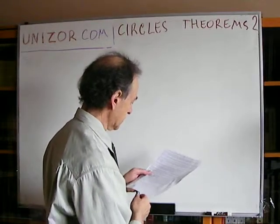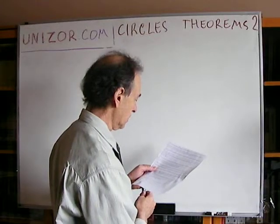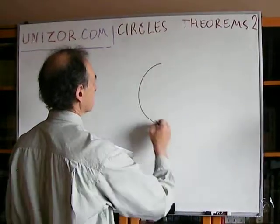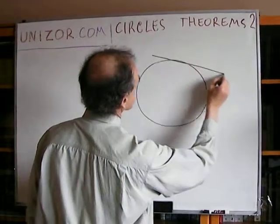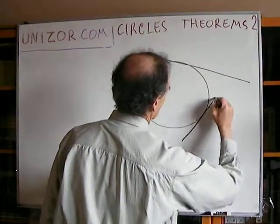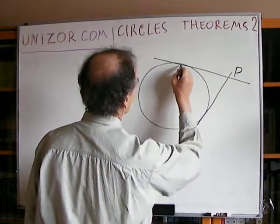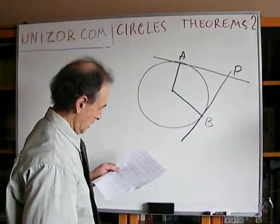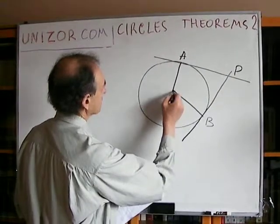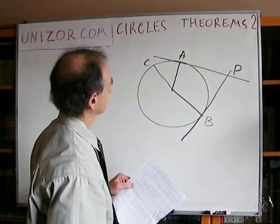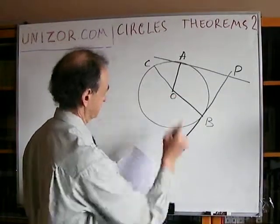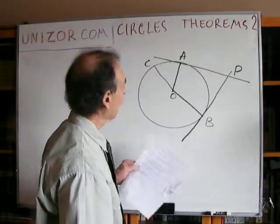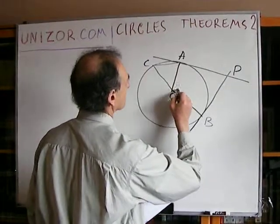Given a circle with center at point O, point P outside, and two tangents with tangency points A and B. These are obviously perpendiculars at A and B. BC is a diameter. Prove that segments AC and OP are parallel.